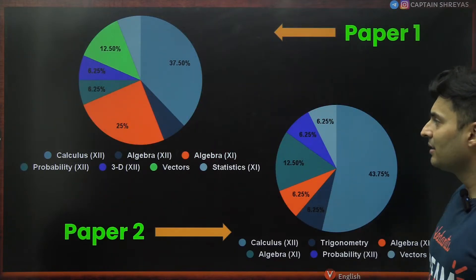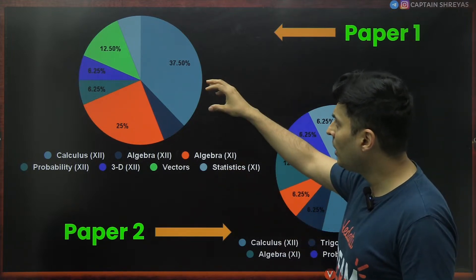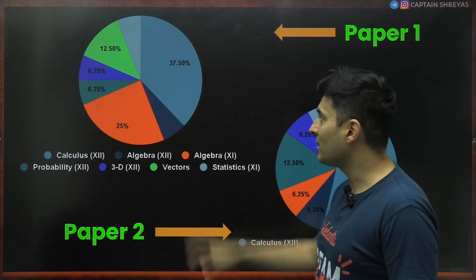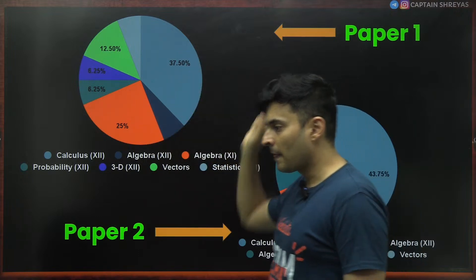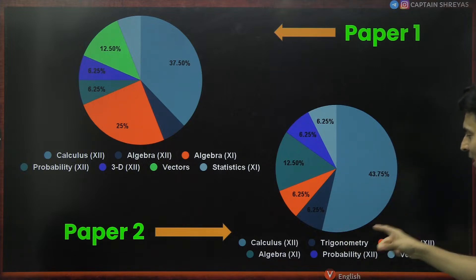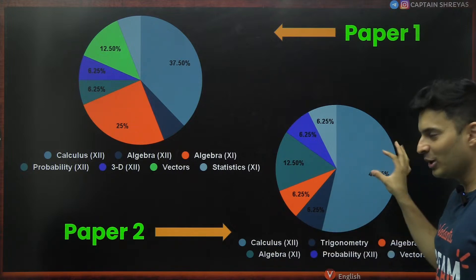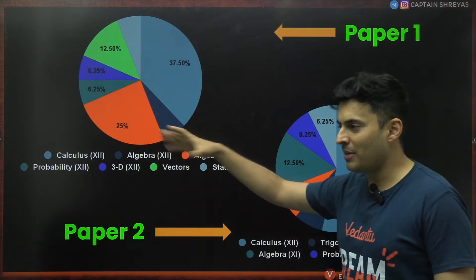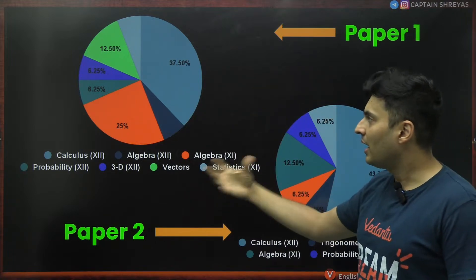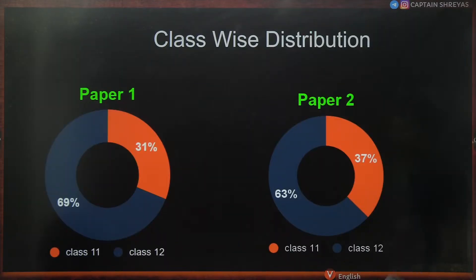In Mathematics, Paper 1 had calculus at 37% and algebra at 25% — making those the dominant topics. In Paper 2, calculus jumped to 43% and algebra dropped to around 12%. Students strong in calculus and algebra would have scored well. Vectors were also asked significantly in Paper 1. Class-wise, barely any Class 11 content appeared, with the majority from Class 12.